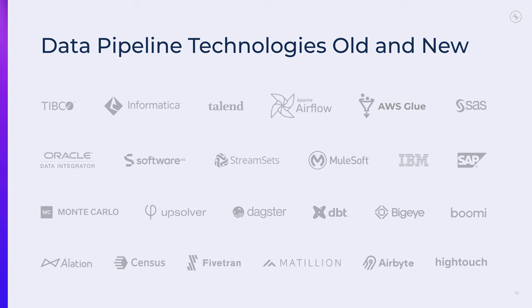When you think about data pipelines and the technology that supports them, there really is a vast array of different things, old and new — technologies that have been around for a decade or more and things just coming onto the scene. It can be hard to make sense of all the stuff that's out there. Part of what I want to do in this talk is try to lay out a framework of where I think this is going — what are the principles for how modern data flow in an organization really taking advantage of real-time data should work.